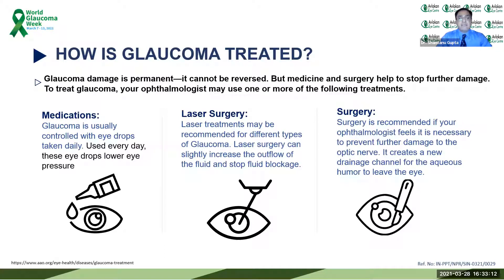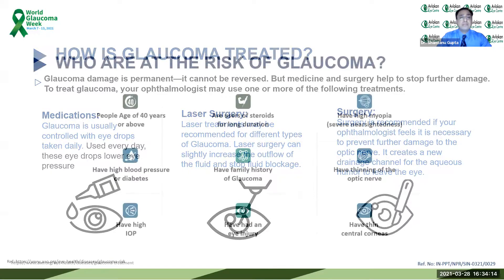An overview of how glaucoma is treated: primarily, medications are the mainstream treatment, where eye drops are used to lower intraocular pressure and prevent glaucomatous damage. Remember, glaucoma management is primarily IOP-related because that is the only modifiable factor we have. Laser surgery is also available to increase outflow and make drainage more efficient. Surgery is recommended when the glaucoma specialist feels necessary, creating an artificial channel through which aqueous humor can leave the eye.